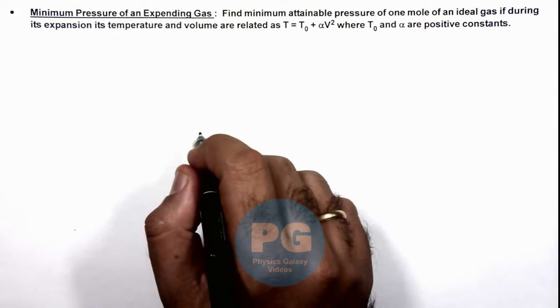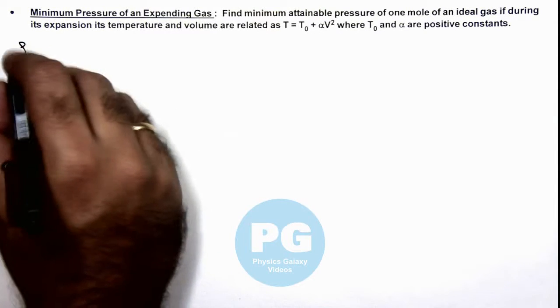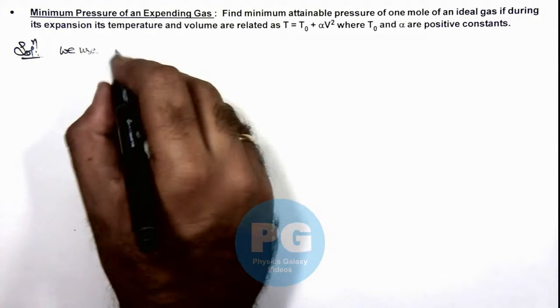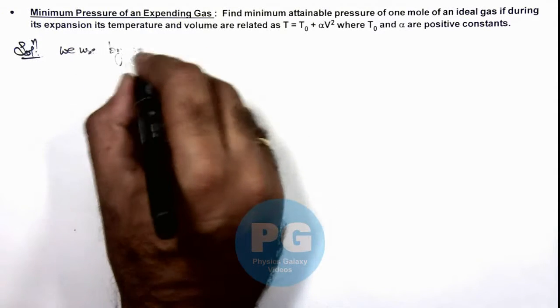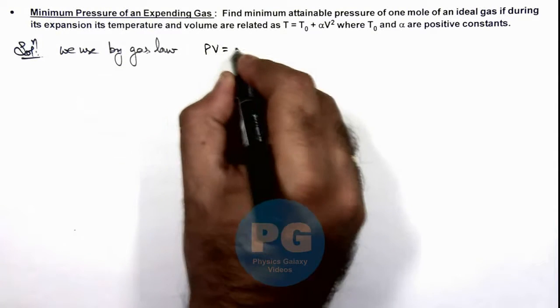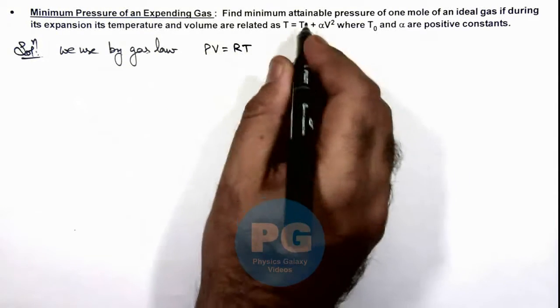So here in the solution, we use the gas law. We can write PV = RT as 1 mole of gas is there.